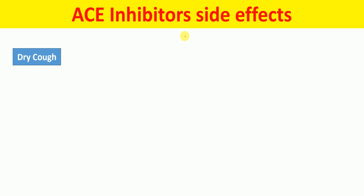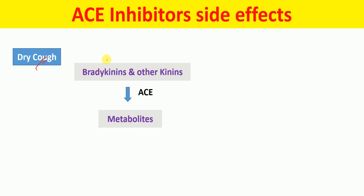Now let me talk about one of the major side effects of ACE inhibitors — that is dry cough. Dry cough is the major side effect of ACE inhibitors. In our body, we have bradykinins and other kinins. For the metabolism of bradykinins and other kinins, we require the enzyme ACE. So basically, ACE metabolizes bradykinins and other kinins, and we get the metabolites of these compounds.